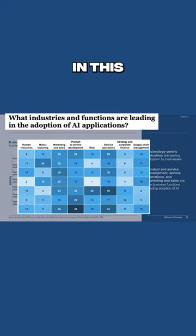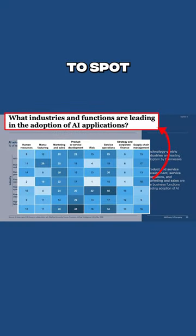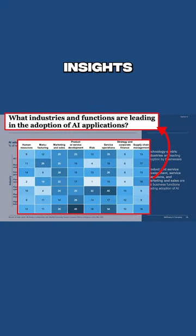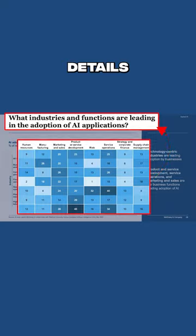Step number three is to look for support. In other words, you want to think about how the data of the slide support the key takeaway. When you think about the slide in this way, you'll be able to spot the important insights instead of getting lost in the details.